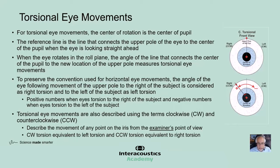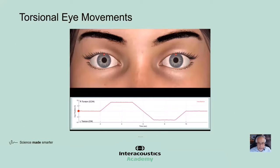Torsional eye movements can also be described using the terms clockwise and counterclockwise, which describe the movement of any point on the iris from the examiner's point of view. As a result, clockwise torsions are equivalent to leftward torsions, and counterclockwise torsions are equivalent to rightward torsions. Here are the torsional eye movement tracings: the upper pole starts upright, torsions to the right, then to the left, and returns to upright. These movements can also be described as counterclockwise, then clockwise, then counterclockwise torsion. Again, for nystagmus, slow phases are always followed by fast phases in the opposite direction.